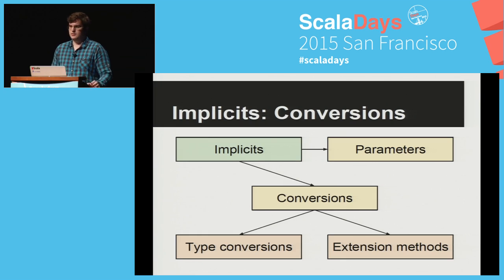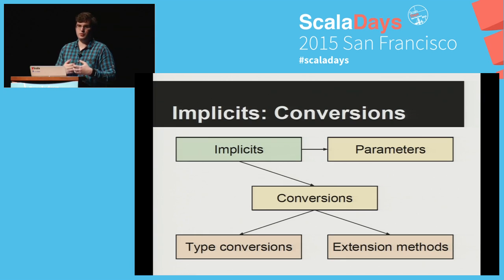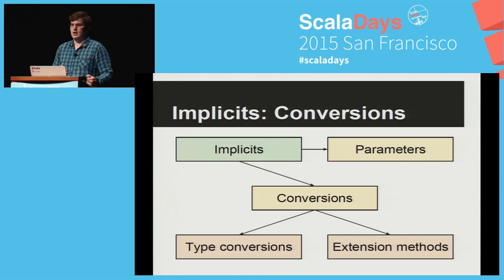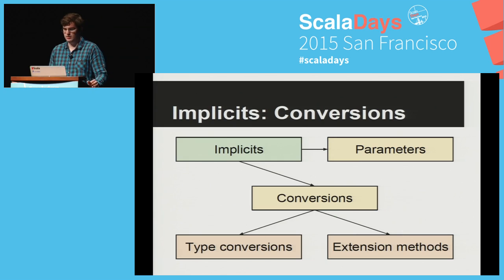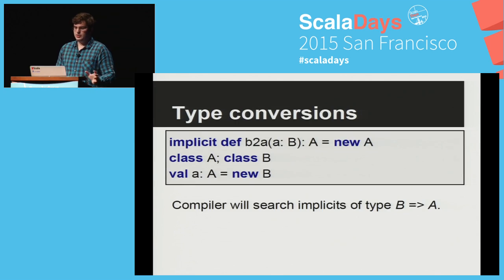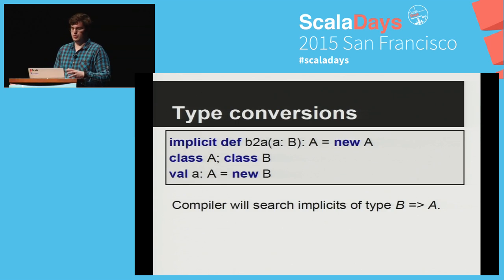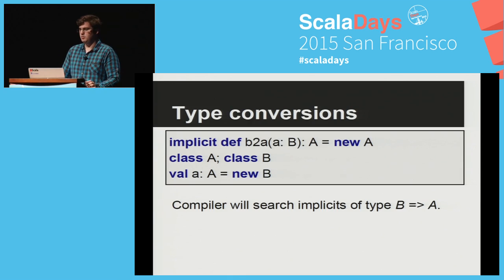These two things are different in purpose. Extension methods are very popular in different languages like C# or Kotlin. Type conversions are less popular and actually in Scala they're also much less popular. Usually people want to use extension methods. But we will start from type conversions as they're a bit simpler. Here you can see a simple example where we have a B-to-A definition with a parameter of type B and return type A.